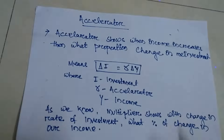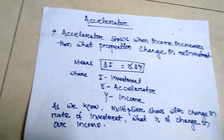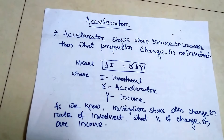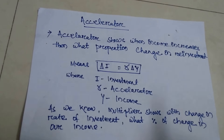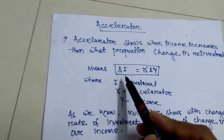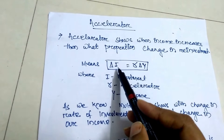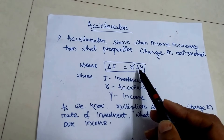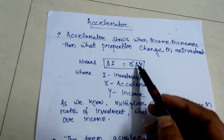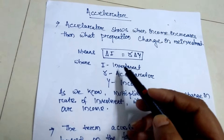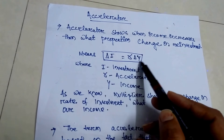If we have more income, we have to make reinvestment. We have to see the proportion of reinvestment in the accelerator. The formula is: change in I equals R into change in Y, where I is investment, R is the accelerator, and Y is income. If income changes by this much, what type of reinvestment happens?